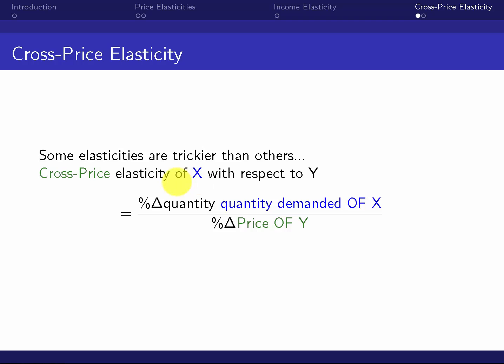So still, whatever comes after this word of, that's the quantity we want. So quantity demanded of X. And the first words, that gives you the something else. So cross-price says the price, but it's not the price of X. It's the price of this other thing. So the cross-price is the price of Y.